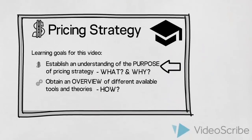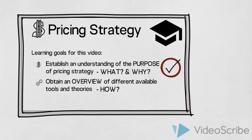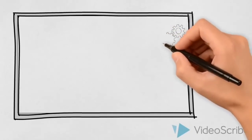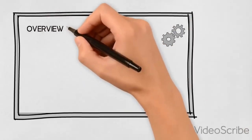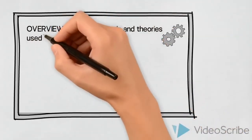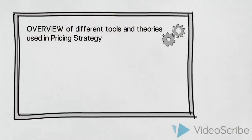We have now established the purpose of pricing strategy — what it is and why we need it. We have established that there are many factors which we need to look at before we can decide on the best price for our product or service. As marketers, we have some different tools and theories we can use to guide us when determining the price. These will not be described in detail in this video, but let us introduce an overview of some of the tools we could use.